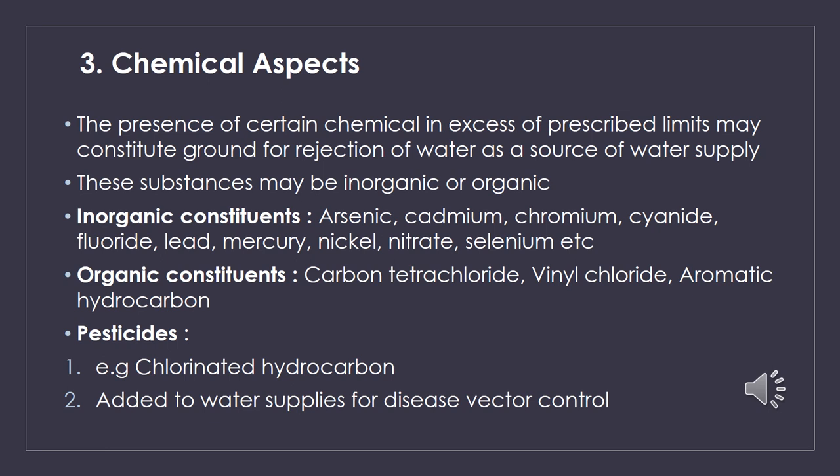The third aspect of drinking water quality criteria recommended by WHO is the chemical aspect. The presence of certain chemicals in excess of prescribed limits may constitute grounds for rejection of a water source. These substances may be inorganic or organic. Inorganic constituents include arsenic, cadmium, chromium, cyanide, fluoride, lead, mercury, nickel, nitrate, and selenium.